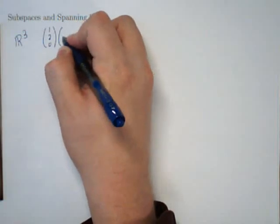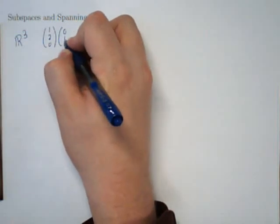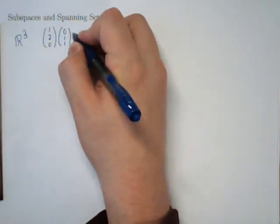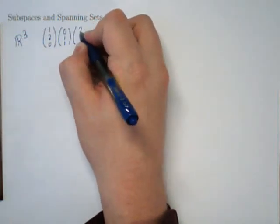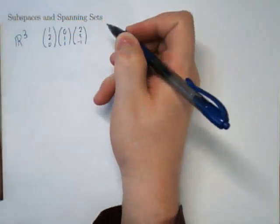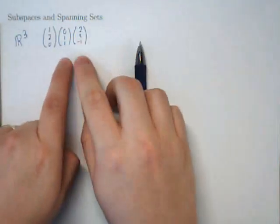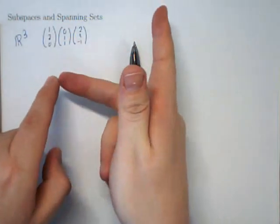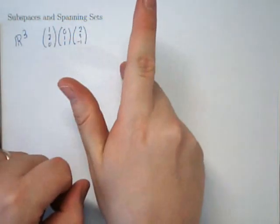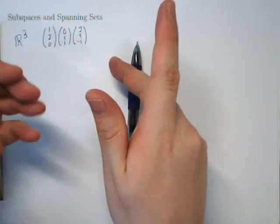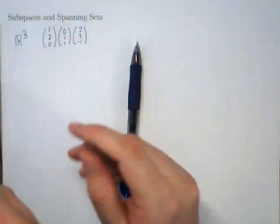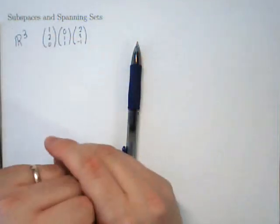The three vectors are (1, 2, 0), (0, 1, 1), and (2, 3, -1). These three vectors happen to lie in space. Question: what set do they span?